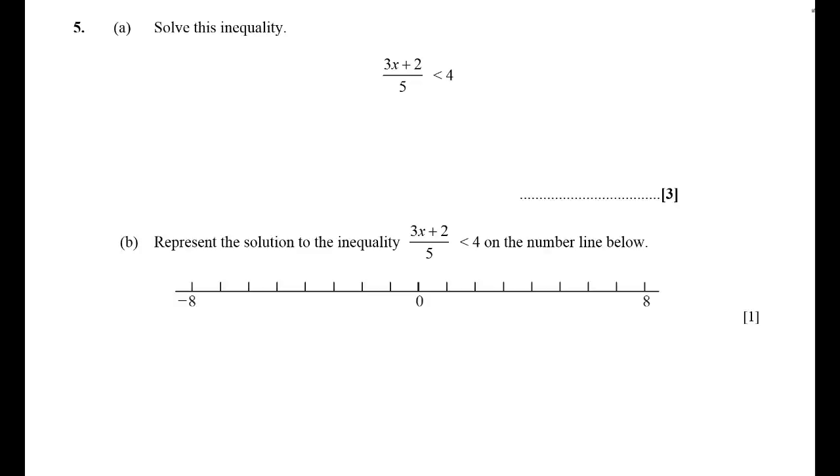I need to solve this inequality just like solving an equation. 3x plus 2 over 5. I need to get rid of the over 5, the divided by 5, so I'm going to times both sides by 5, which will leave me with 3x plus 2 is less than 4 times 5, which is 20.